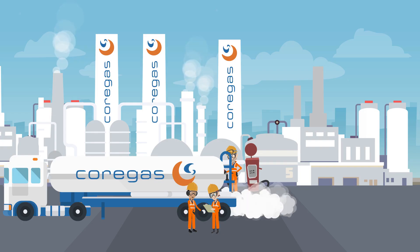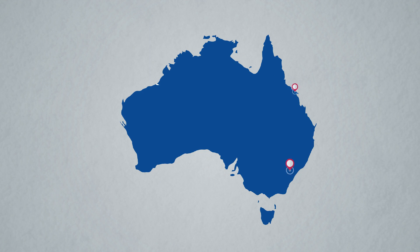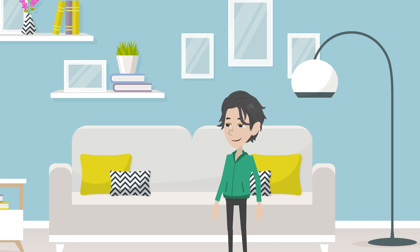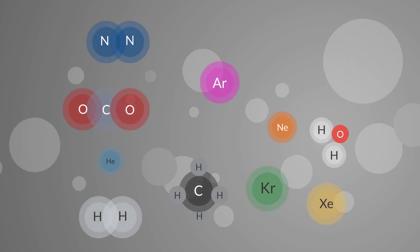We use air separation technology to produce nitrogen, argon, and oxygen. CoreGas operates one of the largest ASUs in the Southern Hemisphere. The air we breathe is made up of many useful molecules. These molecules in their purest form are essential for many everyday and professional uses.